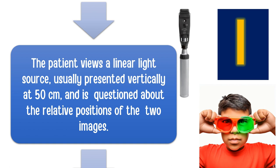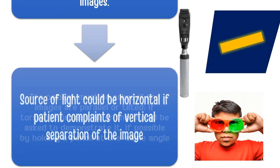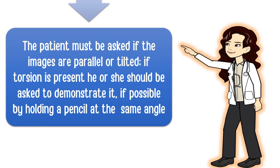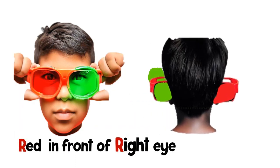Question the patient about the relative position of the two images they see. If the patient reports vertically separated images, it is better to use a horizontal light source rather than a vertical one. Ask the patient whether the images are parallel to each other, whether they are tilted, whether there is any torsion, and whether the patient can demonstrate it. Red filter is placed in front of the right eye, green in front of the left eye — red in front of right eye is your basic rule.